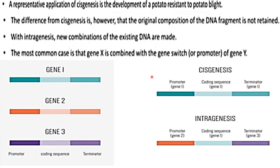In the case of intragenesis, both the promoter and terminator are from two different species, and the gene used for protein expression is also from a different species. This is the difference between cisgenesis and intragenesis.